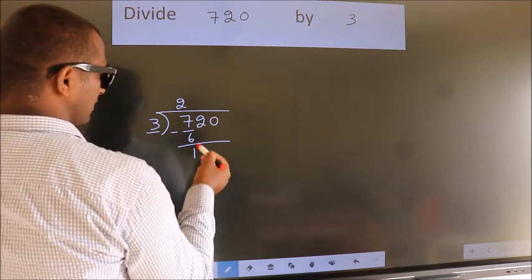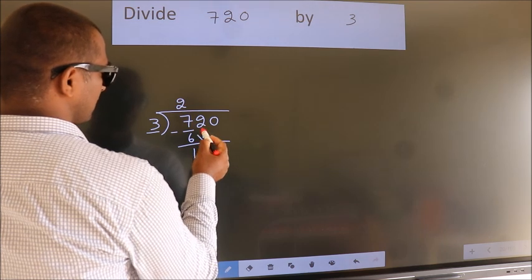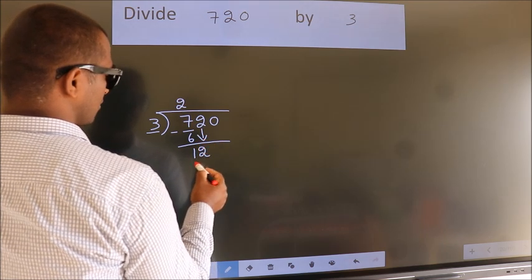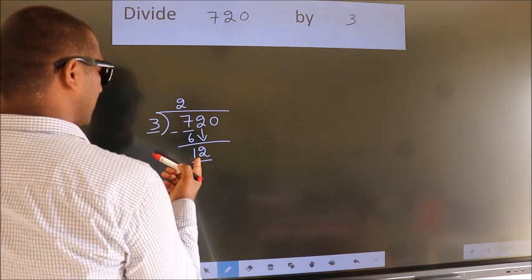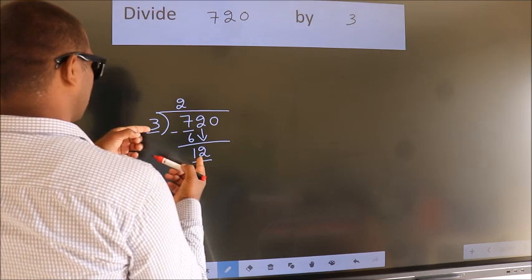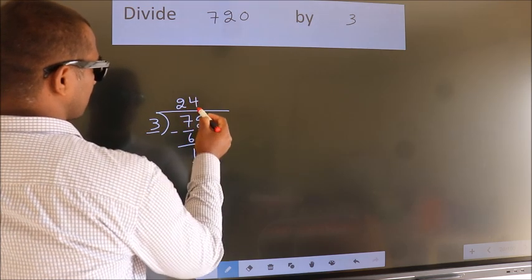After this, bring down the beside number. So, 2 down. So, 12. When do we get 12? In 3 table, 3 times 4, 12.